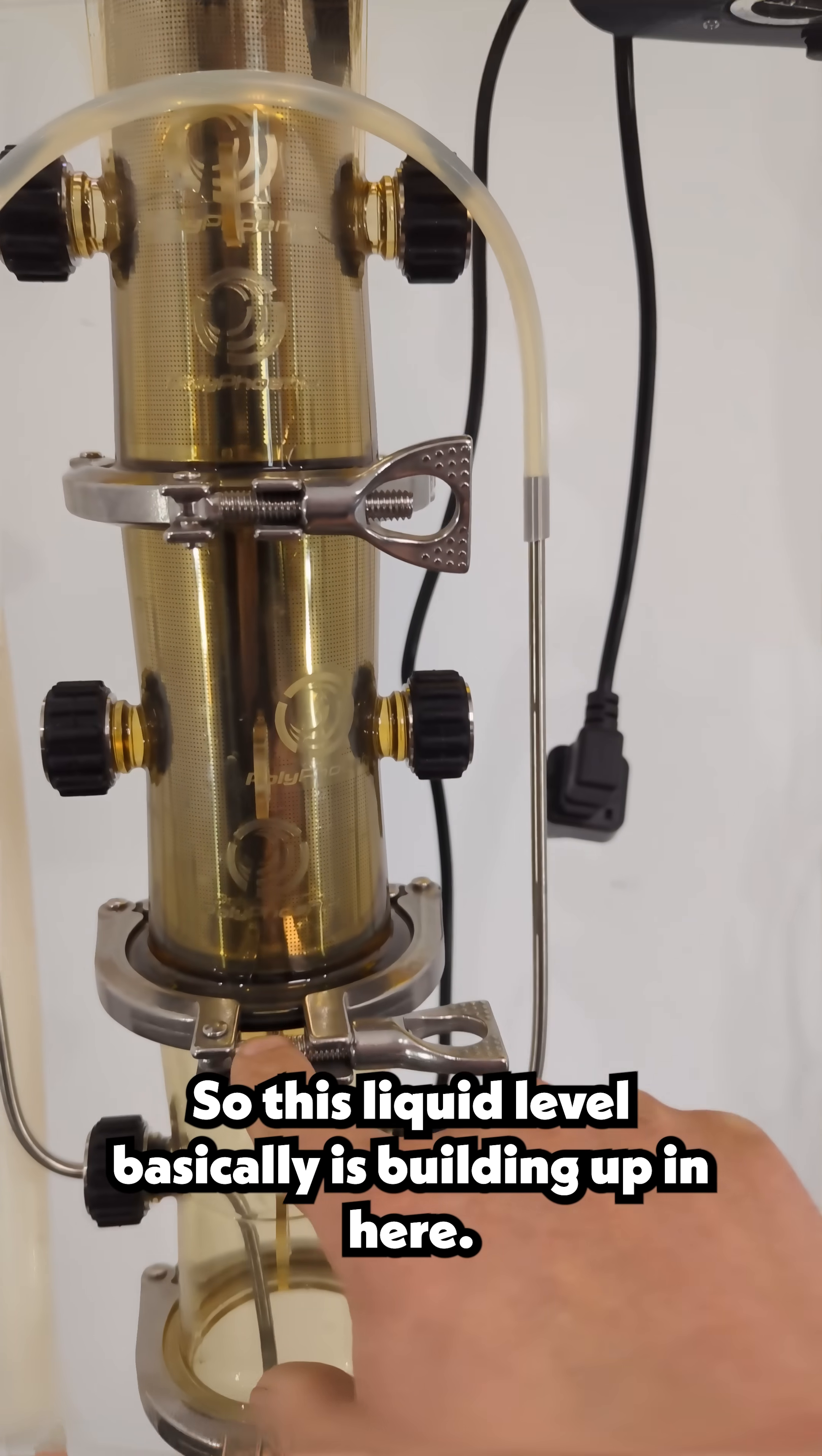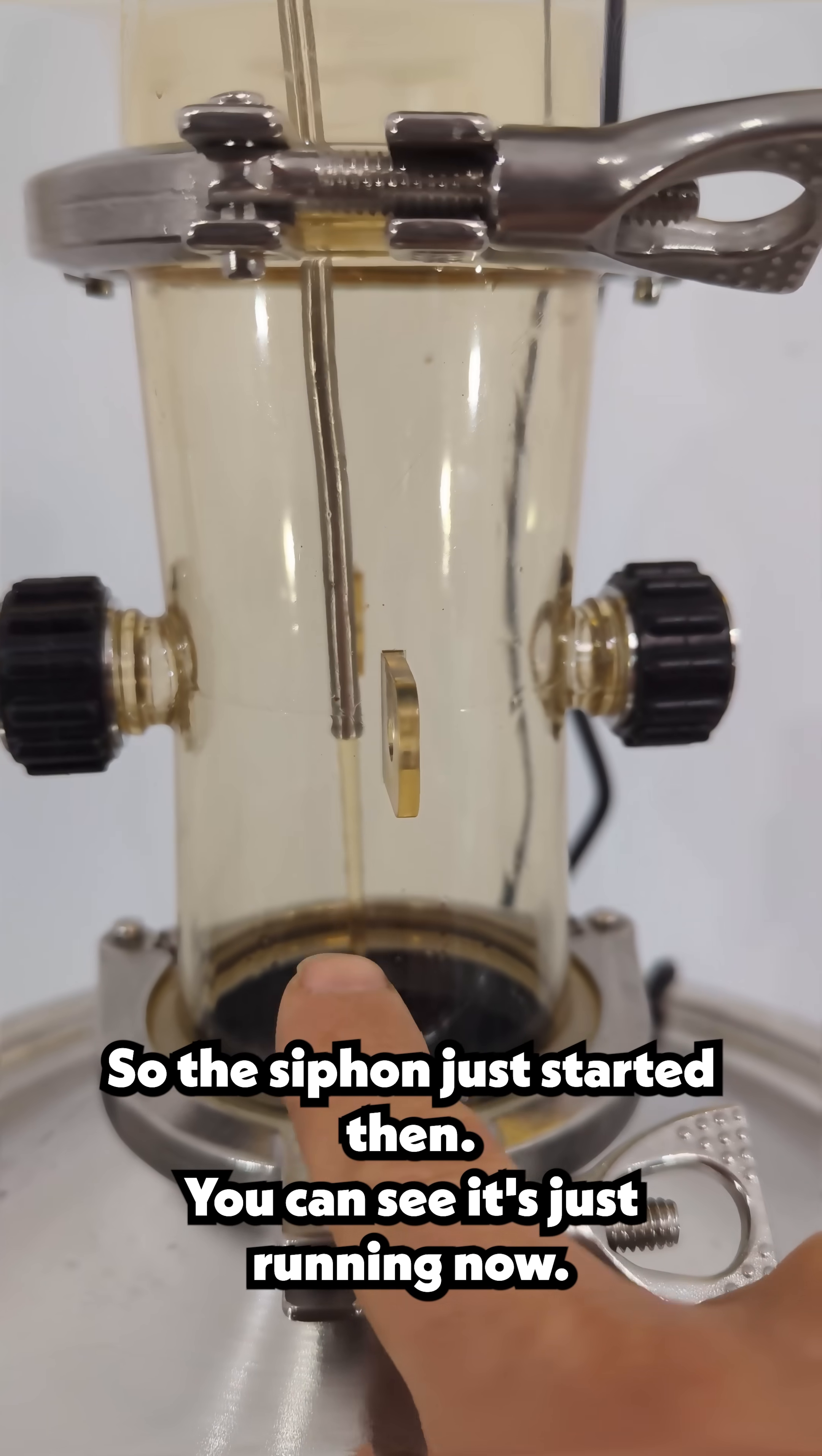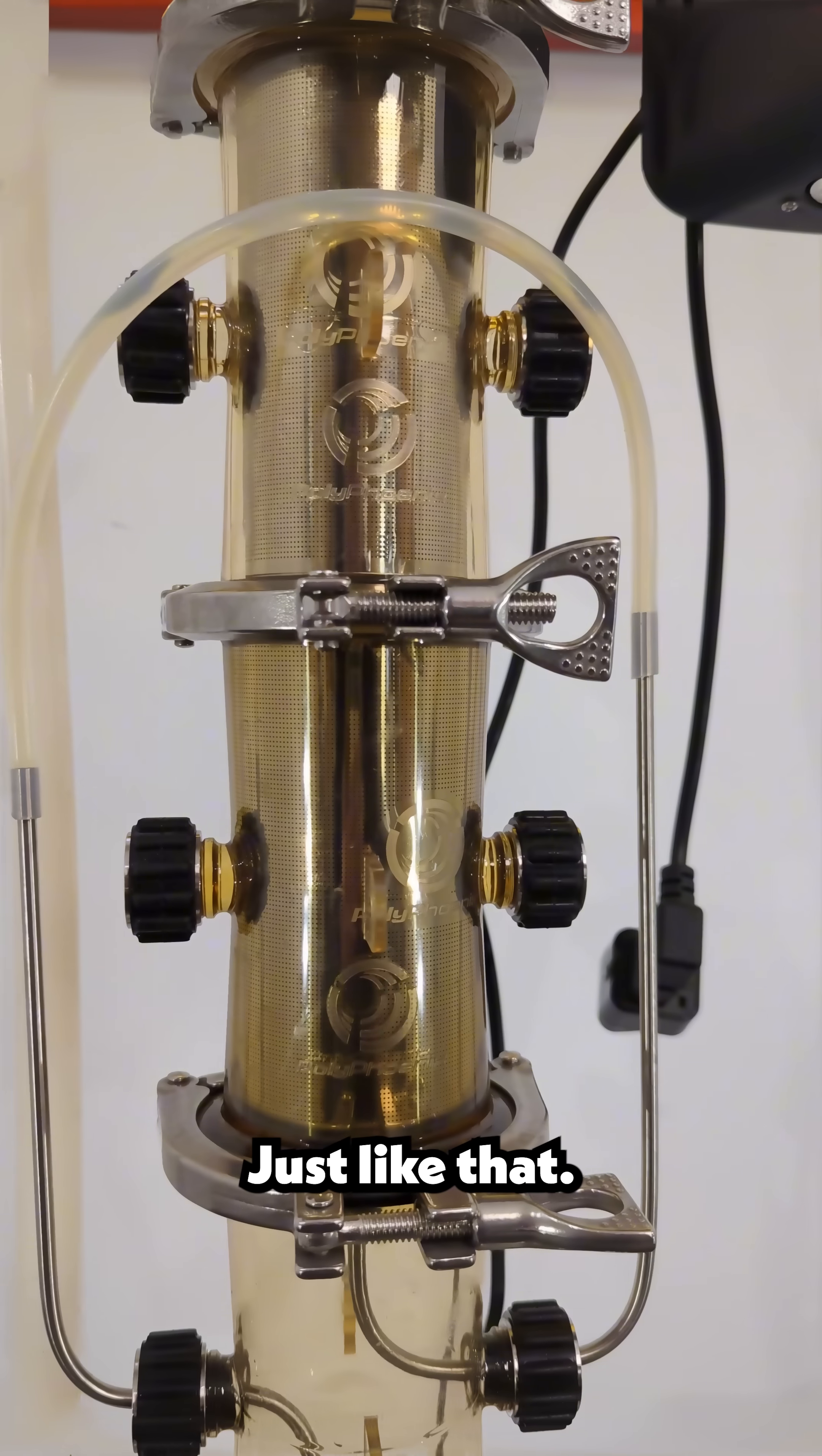So this liquid level basically is building up in here, and eventually it gets to the point where it gets high enough that this siphon starts and basically drains all liquid out. So the siphon just started then, you can see it's just running now, and the liquid level now is coming down here, just like that.